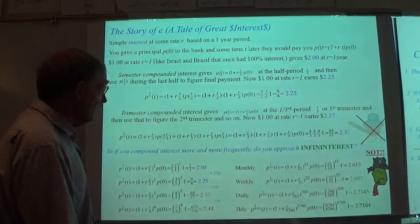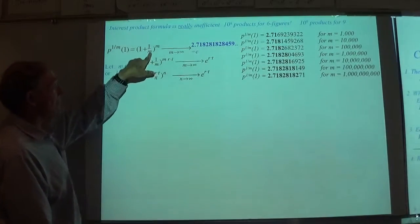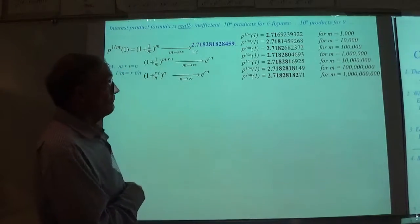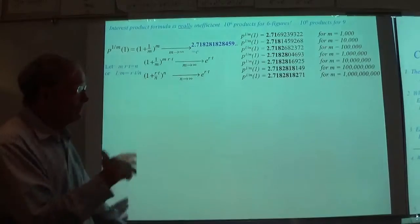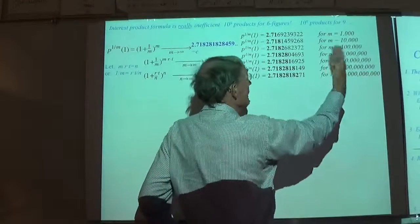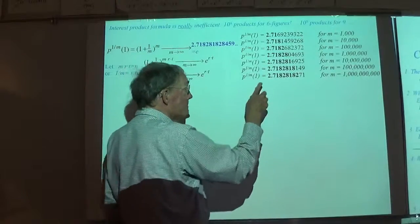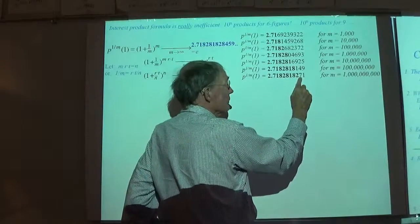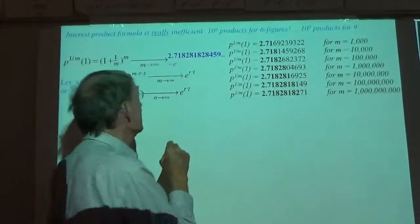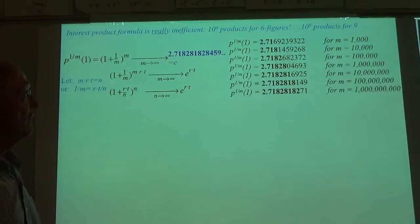That is the exponential at work here. We're imagining an M-compounding function: for M equal to 1,000, then 10,000, 100,000, a million, 10 million, 100 million, a billion. By a billion, all digits on an ordinary calculator with nine-figure precision are fixed. You're getting exactly the value of the marvelous constant called e — the exponential constant of Napier and Euler. Euler gets his first letter on this function.